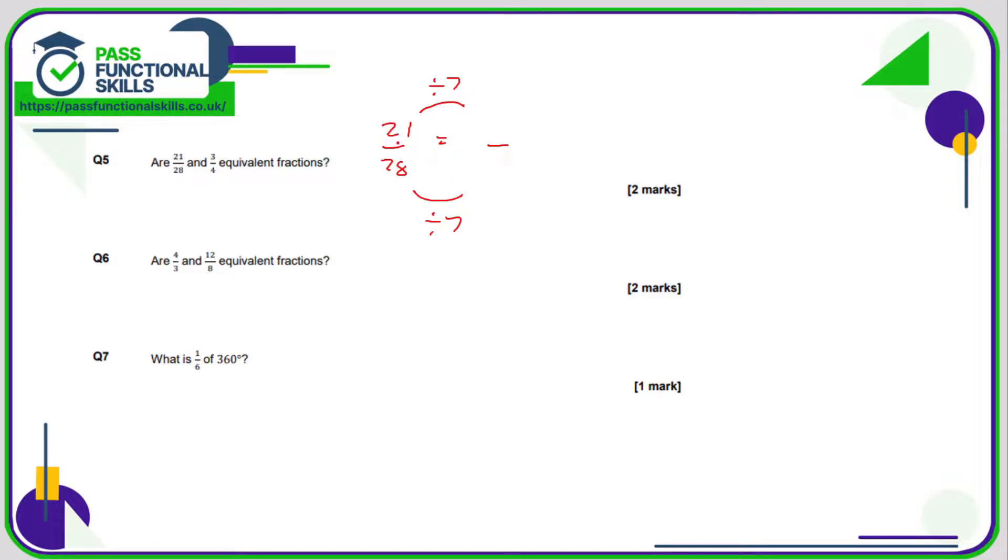21 divided by seven is 3, 28 divided by seven is 4, so yes they are equivalent fractions.